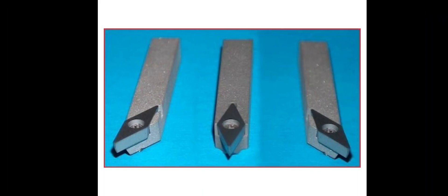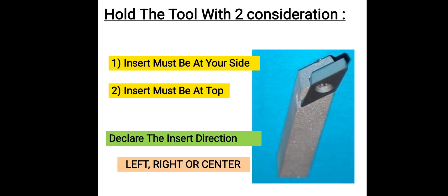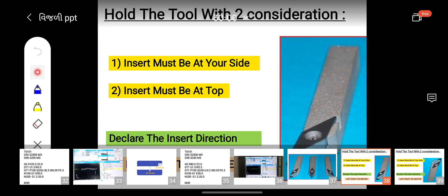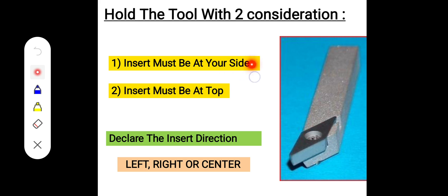In this video we are going to learn about the identification method for types of cutting tools — left-hand tool, right-hand tool, or neutral tool. We can identify which kind of tool it is using only two considerations: first, the insert must be at your side, facing towards you; and second, the insert must be at the top.